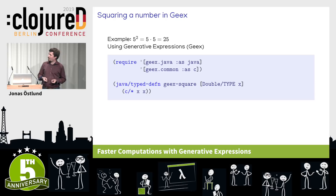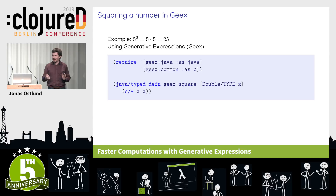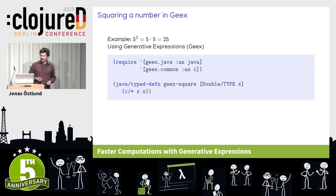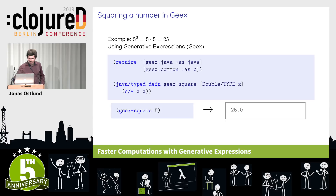I require a few namespaces from the geeks library. Then I use type defn to define geeks-square, which is my function. In the argument list I also specify the type, which is going to be double. Then I multiply my number by itself to compute the square. I use the multiplication function from the geeks.com namespace instead of the core Clojure function. Calling this function with 5 gives 25, as expected.